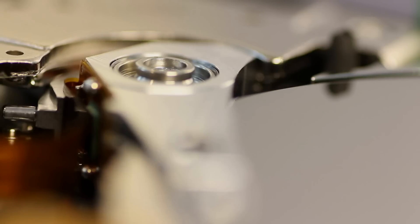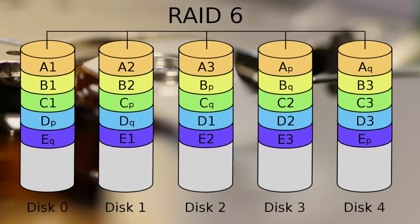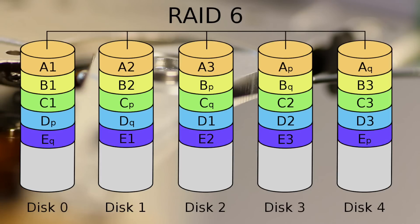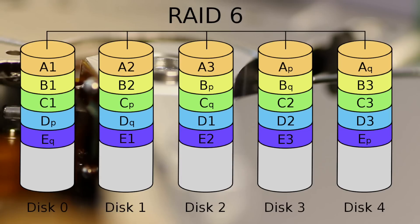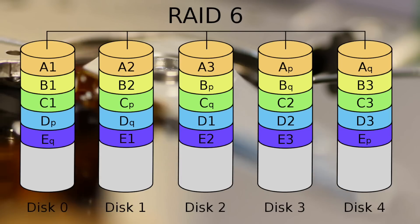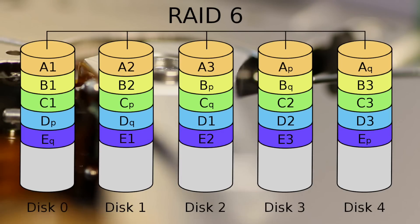So we have RAID 6. RAID 6 is similar to RAID 5, but each drive has 2 parity bits instead of 1, spread equally across all drives. In simple words, you can have any 2 drives in an array fail and still have your data be safe.